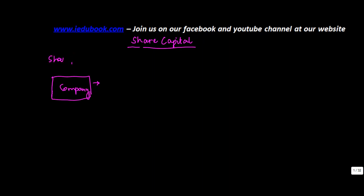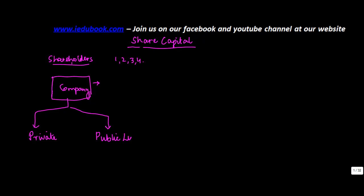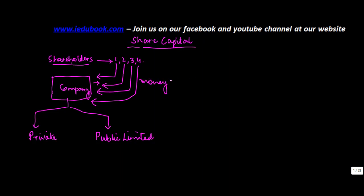So what happens in a company is that there is a set of people who are called the shareholders. These shareholders can be as many in number as possible, depending on the type of company. Each of these shareholders will put in some money into the company. The money put in by the shareholders is called share capital.